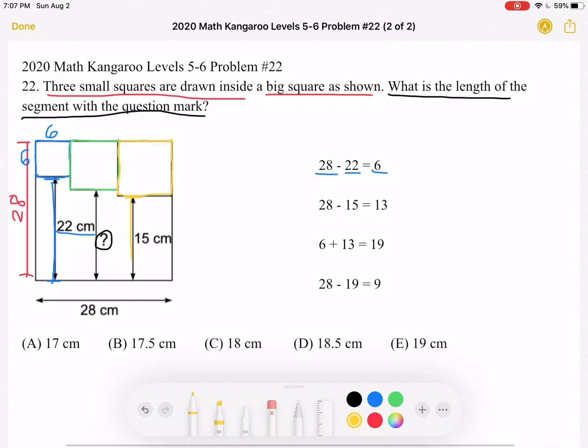And we know that the length from here to here is 15 centimeters. So 28 minus 15 is 13. The side length of the yellow square is 13.